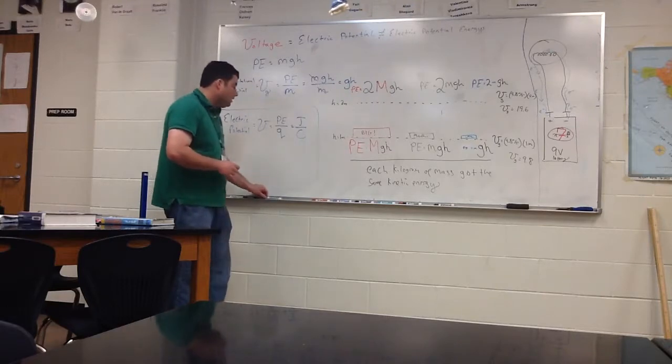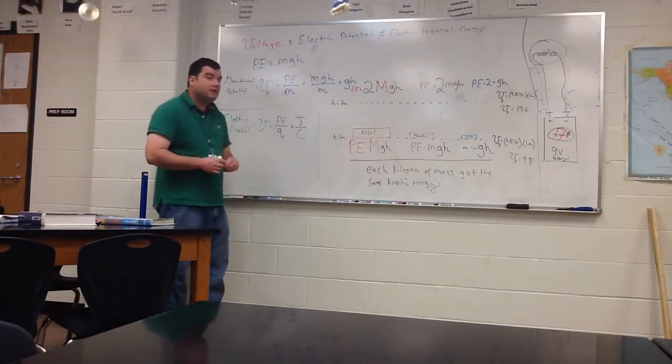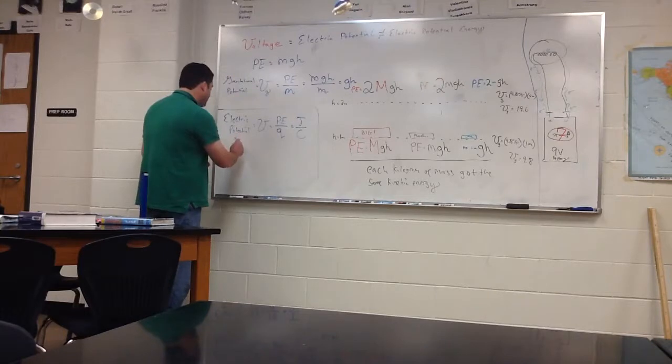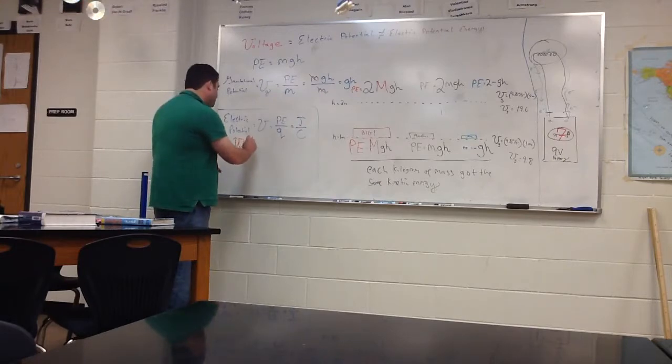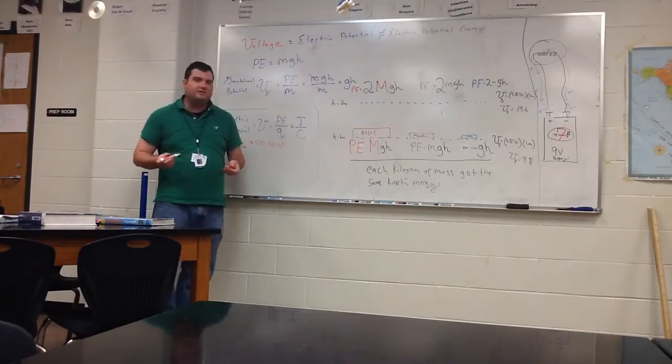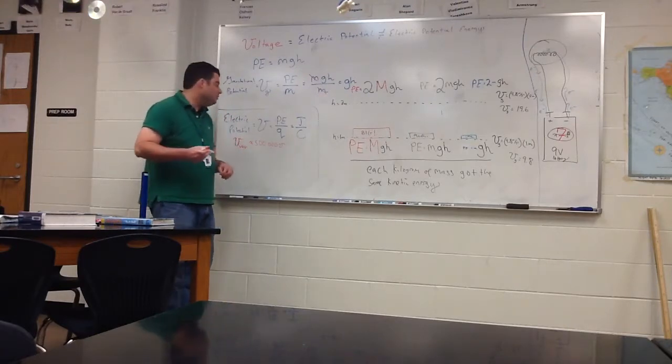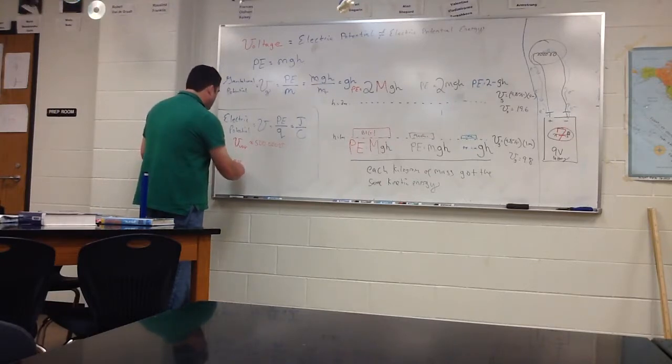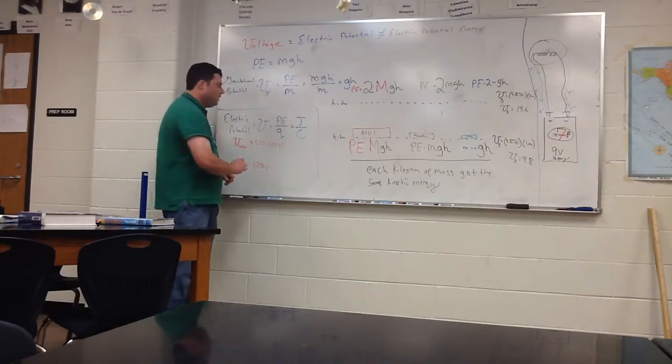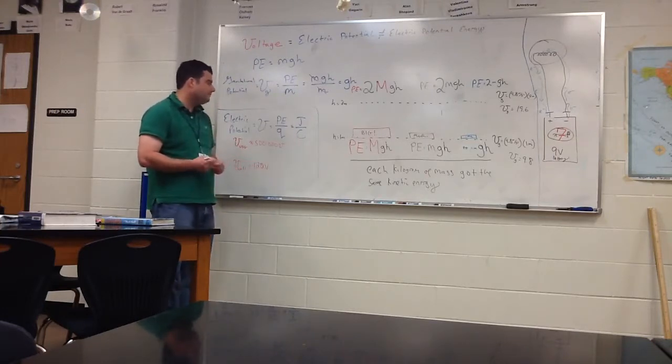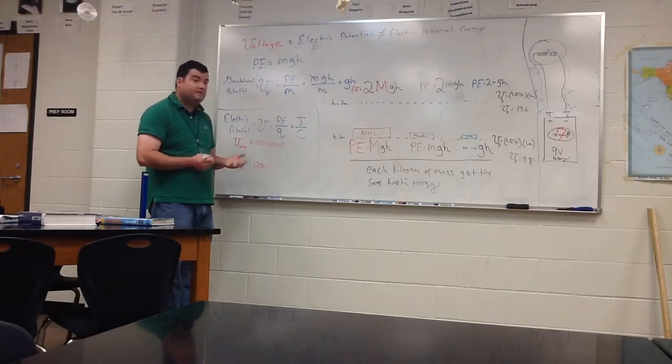One final thing here. Sometimes people are surprised to see that the Van de Graaff generator has about 500,000 volts. But I'm willing to shock myself with it. I probably would not be willing to shock myself with wall current, which is, in the US, 120 volts. Why? Why this and not that?